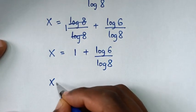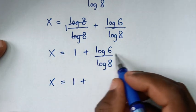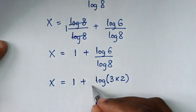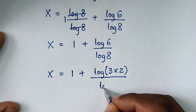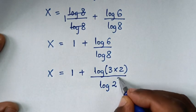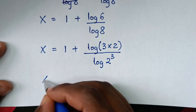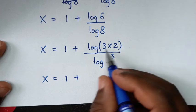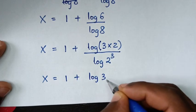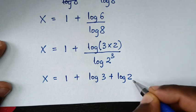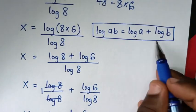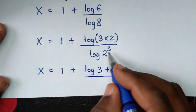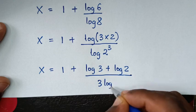Then it will be x is equal to 1 plus log of 6. Now 6 is the same as 3 times 2, and 8 is 2 power 3, then bracket over log of 8. So it will be x is equal to 1 plus log of 3 times 2, which is the same as log of 3 plus log of 2, over log of 2 power 3. This power of 3 will move to the base, so it will be 3 log of 2.